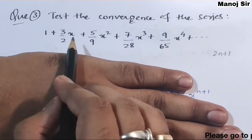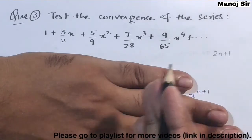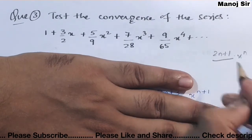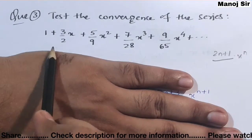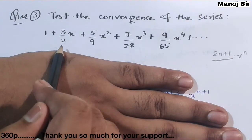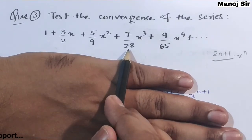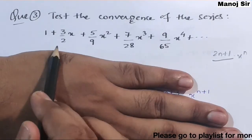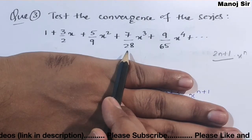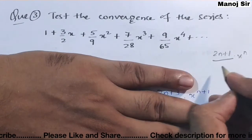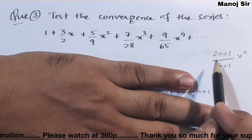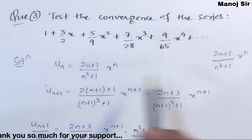We also have incremental powers of x: x, x², x³, and so on. As the number of terms increases, the power of x increments by 1, so it is x to the power N. For the denominator: 2, 9, 28, 65. These are 1+1, 8+1, 27+1, 64+1 — that is 1³+1, 2³+1, 3³+1, 4³+1. So the denominator is N³+1. Therefore UN = (2N+1) / (N³+1) · xᴺ.